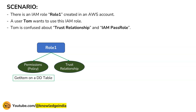Let's say Role One has been created for the purpose that the EC2 service will assume it. We want this role to be given to EC2 instances, where some code on those instances will interact with the DynamoDB table. So the trust relationship specifies that only the EC2 service can assume this role — Lambda cannot assume it, some other user cannot assume it.